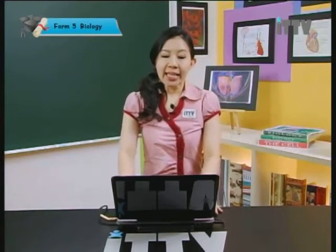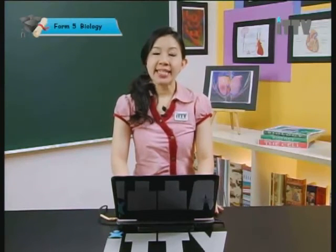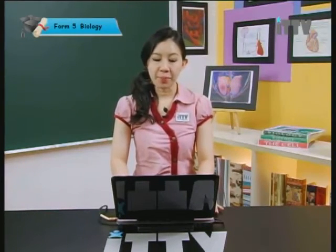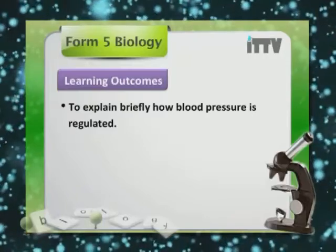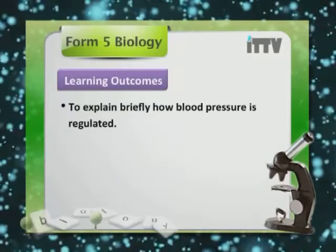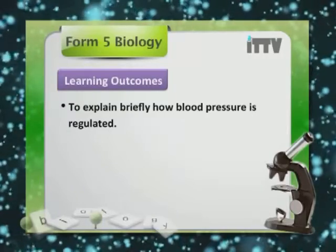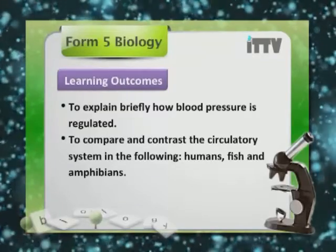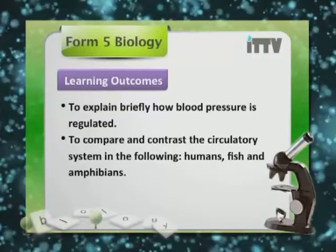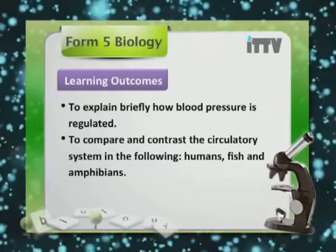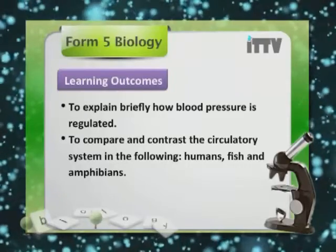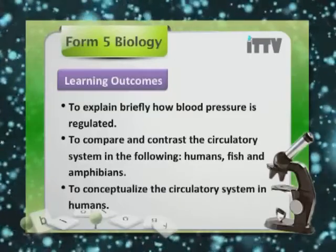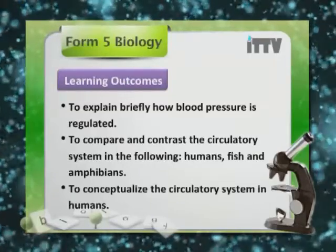Let's look at the learning outcomes for today's lesson on Transport Chapter 1. Firstly, to explain briefly how blood pressure is regulated. Secondly, to compare and contrast the circulatory system in humans, fish and amphibians. And to conceptualise the circulatory system in humans.